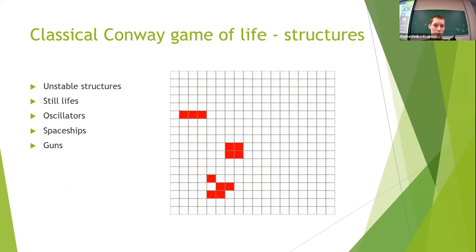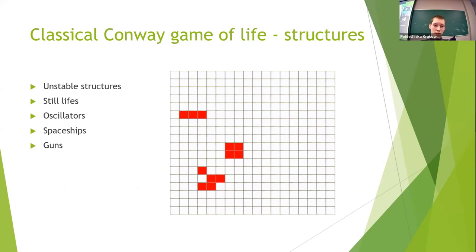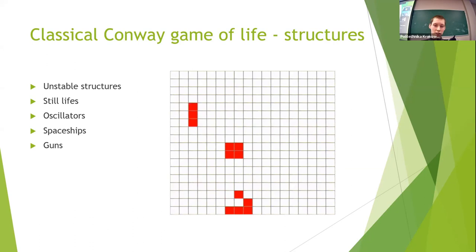The rules defined in this way allow for the construction of various types of structures. The first are unstable structures that change in successive cycles but do not return to their initial state. Next, we have still lifes — structures that look the same in the next generations, never changing their shape. An example is the square closest to the center of the board, and that structure is called the block.